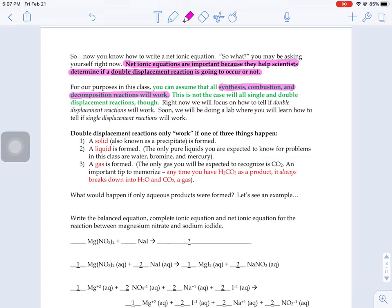What you're going to be on the lookout for in a double displacement reaction, you have to have one of three things happen. You either have to form a solid, you have to make a precipitate, you have to form a liquid. And remember, there's only three pure liquids that you're expected to know for class.